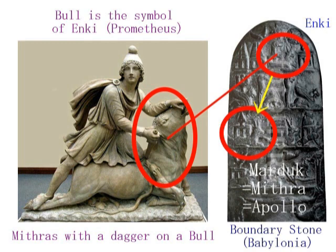このギリシャ彫刻を見る限り、ミトラはエンキ・エアを倒して王座についた、ということになります。ギリシャ彫刻というのは、それまでの神々の歴史を彫刻という形で表した、いうなれば3Dの立体歴史書ということになります。それはともかくも、牛はエンキ・エアをシンボリックに表現する象徴的な動物ということになります。